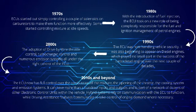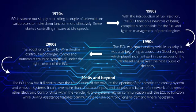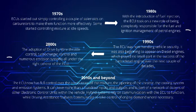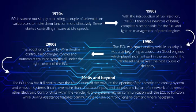By the 2000s, the adoption of drive-by-wire throttle control, turbocharger control, and numerous emission systems all were under the tight control of the ECU. Over the past decade, the ECU now has full control over the combustion of the mixture, the opening of the throttle, the cooling system, and emission systems. It can have more than 100 inputs and outputs and is part of a network of dozens of other electronic control units within the vehicle.